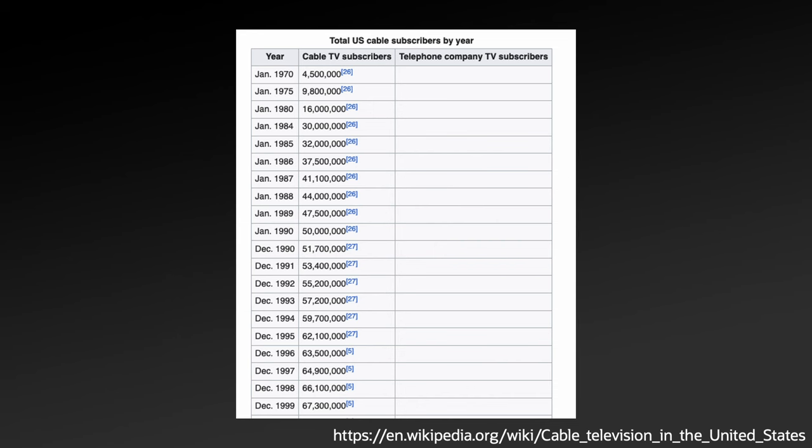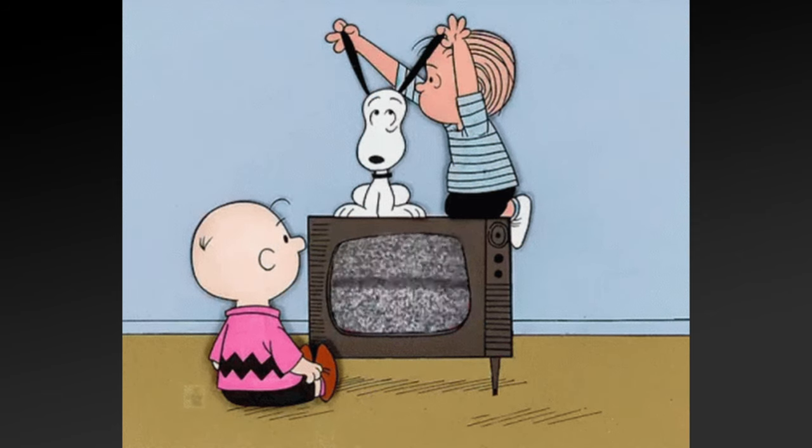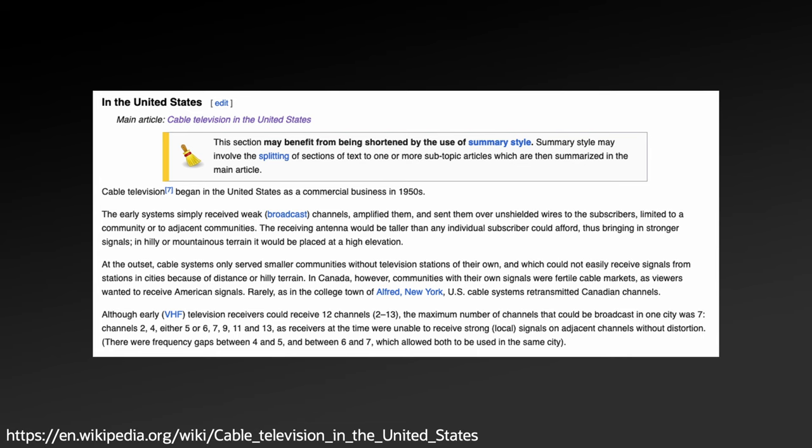Back in the 80s and 90s in the U.S., there was a rapid rise in the popularity of cable television. Cable television provided several advantages over over-the-air transmission, including higher quality video that wasn't impacted by atmospheric conditions and more channels.